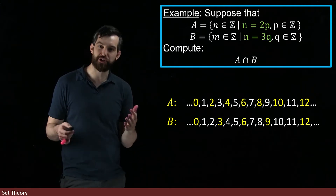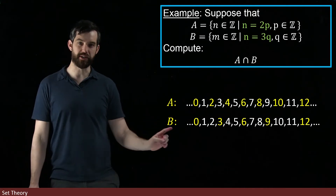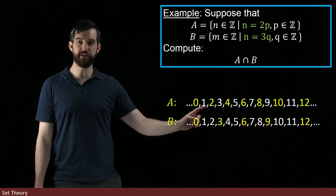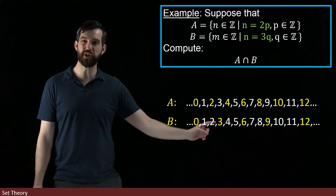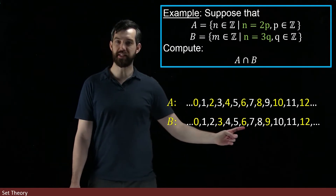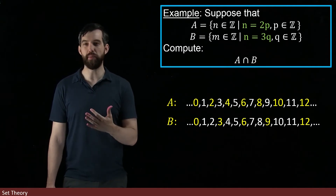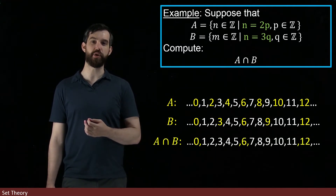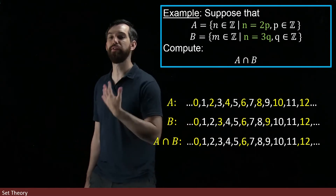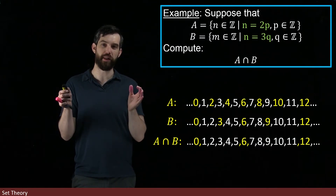The intersection consists of the things that are in both A and B. The 0 is in both of them, so that counts. The 2 is only in A, the 3 is only in B, the 4 is only in A, but then the 6 is highlighted in both. So this looks like the multiples of 6 — and indeed that's what A intersect B is going to be: 0, 6, 12, all of the multiples of 6. That's what it means to be both a multiple of 2 and a multiple of 3.